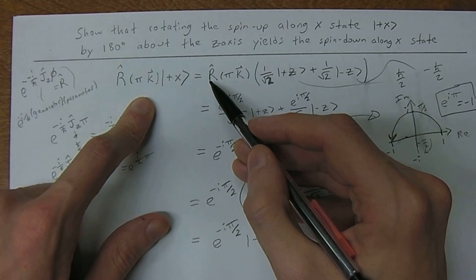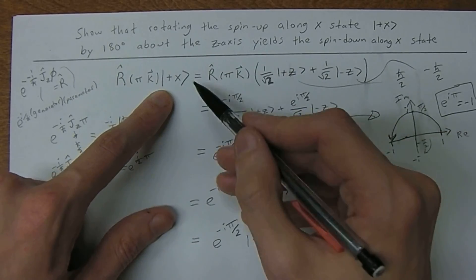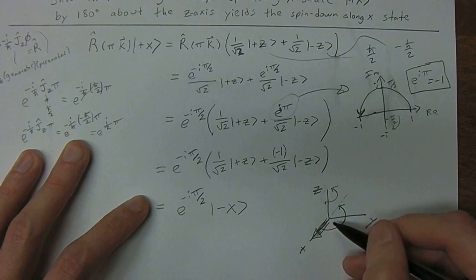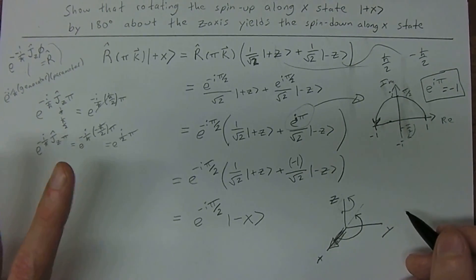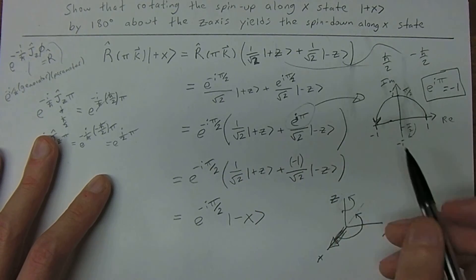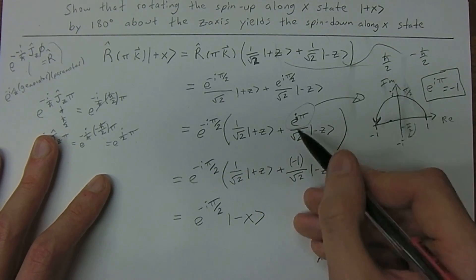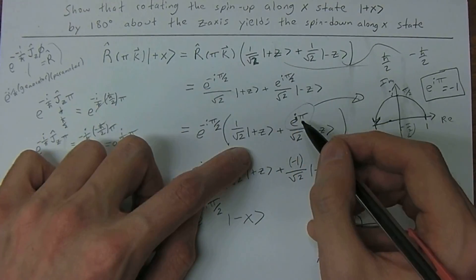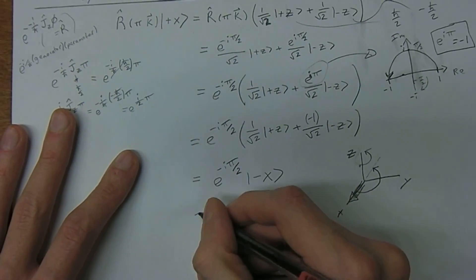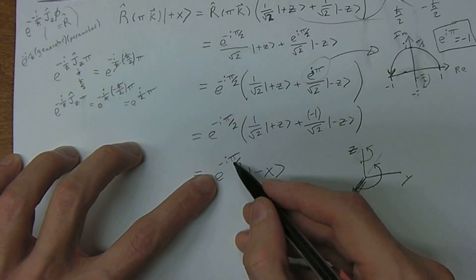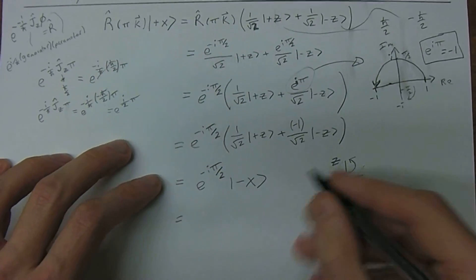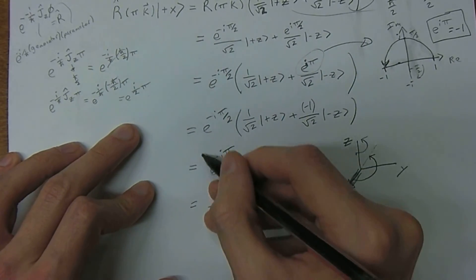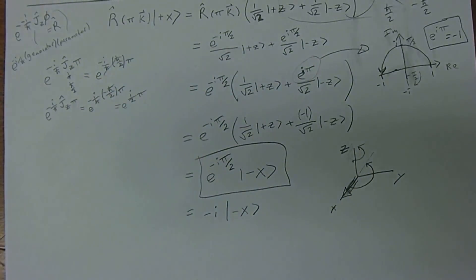We introduced a convenient way to rotate a vector to another state using these phases. The relative phase inside the bracket is physically meaningful, but the overall phase out front doesn't matter. If you evaluate e to the negative i pi over 2, you get negative i, giving negative i times minus-x. But that overall phase is irrelevant — the book ends the result there. Thank you for watching, and have an excellent day.